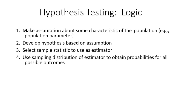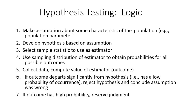Then we select a sample statistic to use as our estimator — in this case, we're using the mean. We use the sampling distribution of that estimator to obtain all probabilities for possible outcomes. This is a theoretical step because there are distributions already out there that have done all the work for you. Next, we collect data and compute the value of the estimator. If our outcome departs significantly from the hypothesis, we call this significance and reject the hypothesis — concluding our research hypothesis was correct. If the outcome has a high probability, we reserve judgment.